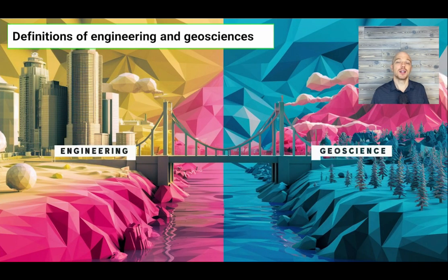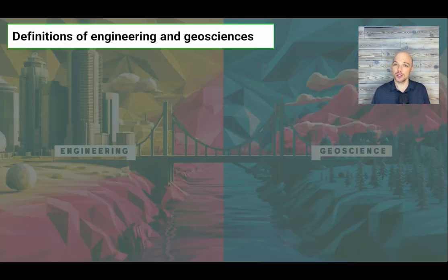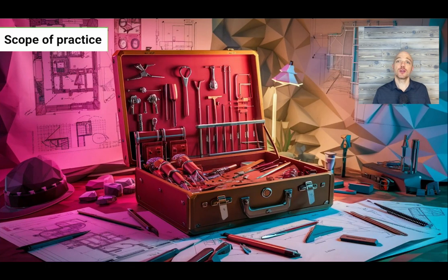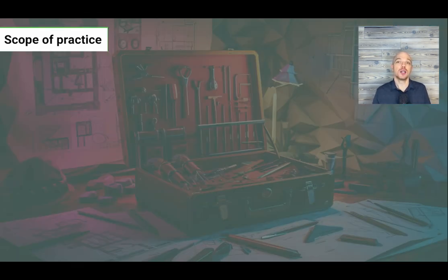Engineering can be defined as the design, fabrication, and construction of human solutions which rest on the knowledge and proper use of engineering and scientific principles. Geoscience can be defined as a science that puts to use a scientific method to predict, investigate, map, and model the Earth's natural system behavior. Each association in Canada defines what professionals do to give its members the advantage of performing those services, while non-members can be sued if they practice engineering or geoscience without holding a proper license.